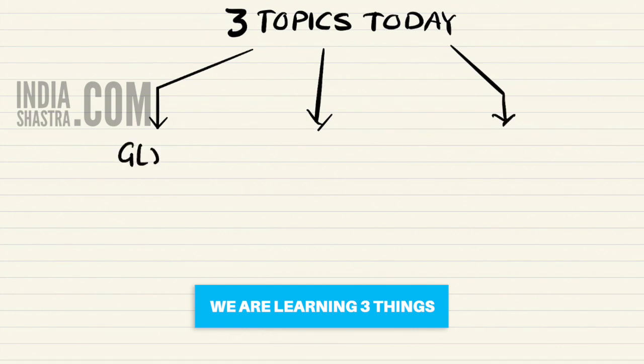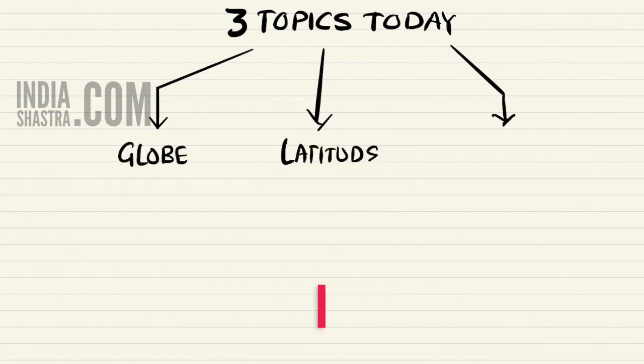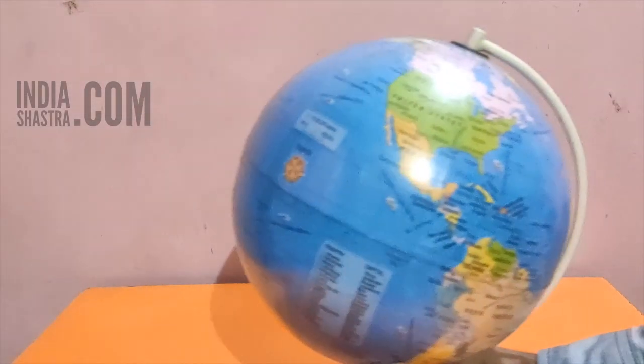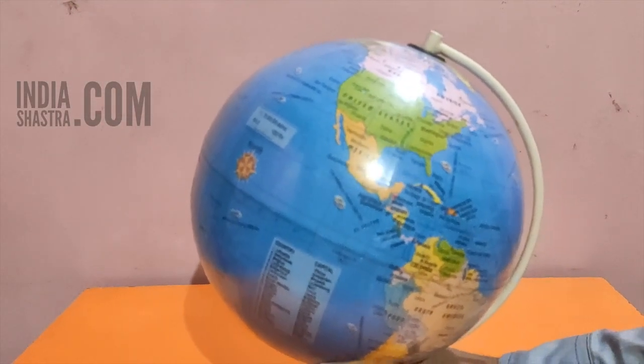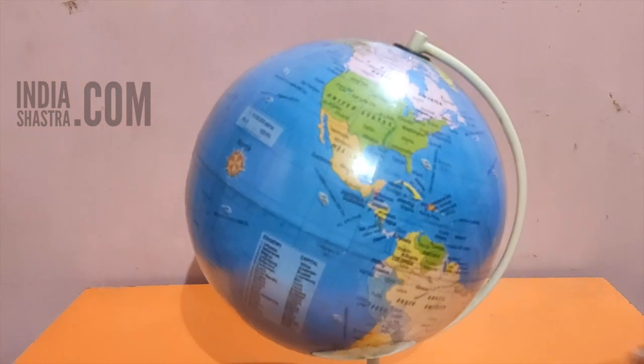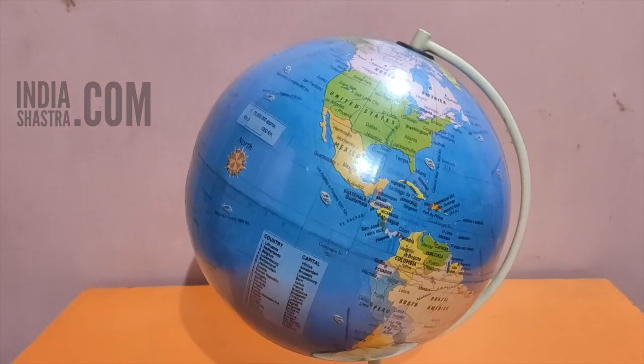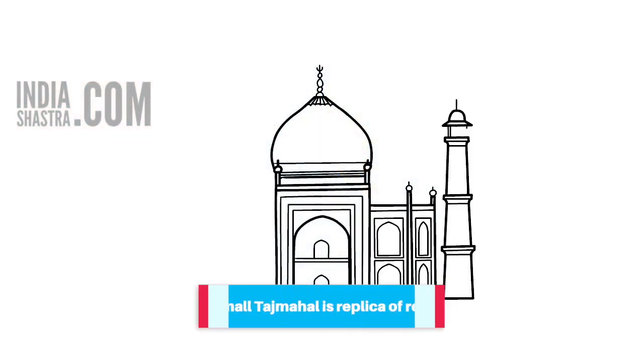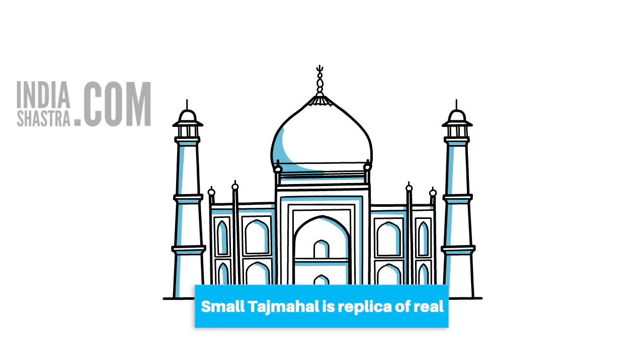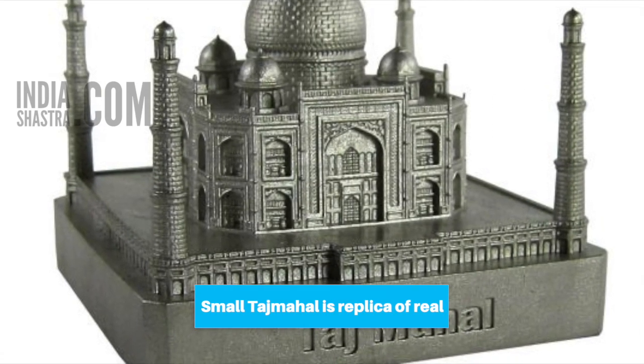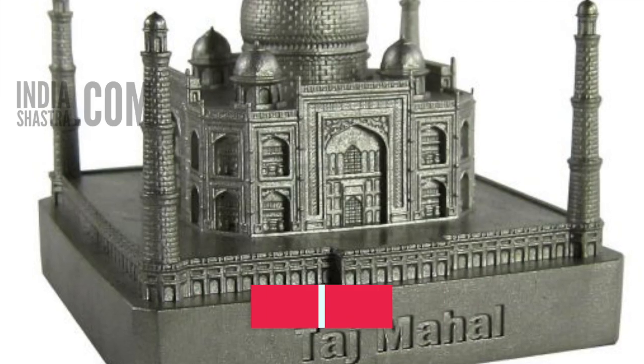In this video, we are talking about the globe, the latitudes and longitudes. The globe is a true model of the Earth - it is the miniature model of the Earth.